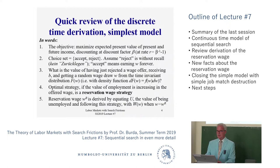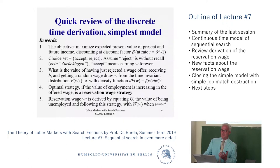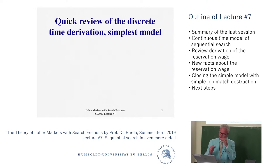The way we solve for the reservation wage - and we'll do that several times today - is you're going to equate the value of being unemployed: the idea of having just rejected the last offer, receiving unemployment income B, and then having at the end of the period another chance. So it's basically accept or reject: compare the value of rejecting with the value of accepting, and then solve for the reservation wage.